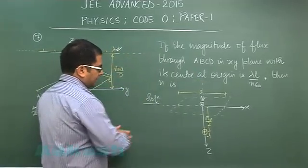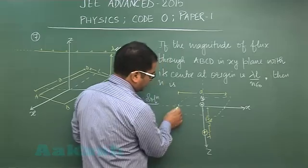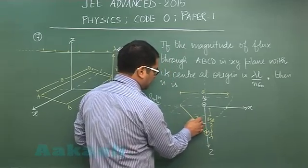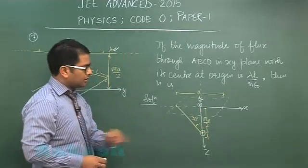If you see the geometry of the figure, this is root 3a by 2, this is a, so this has to be a by 2. So this particular plane angle would be 30 degrees because this is a by 2, this is root 3a by 2, quite obvious.